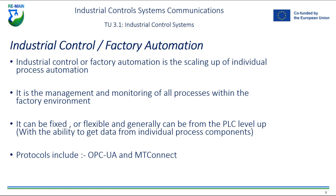One step above individual process control is industrial control or factory automation. This is the scaling up of individual process automation into one larger holistic control management system. You're managing and monitoring all the processes within the factory environment and, if needed, arranging scheduling and coordination between these processes. It can be a fixed or flexible setup, generally from the PLC level up, with the ability to get data from individual process components if required.